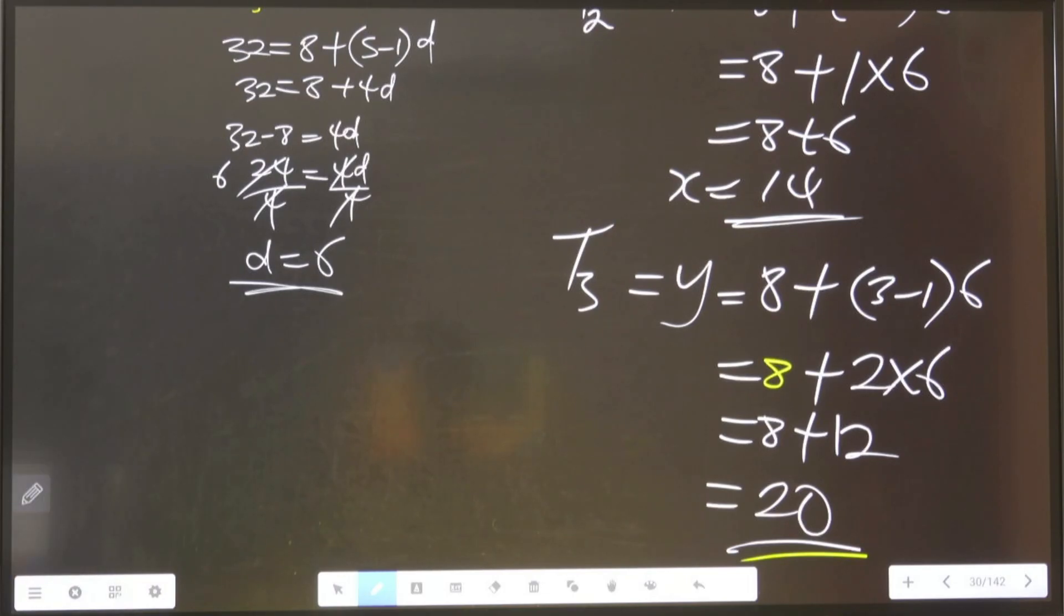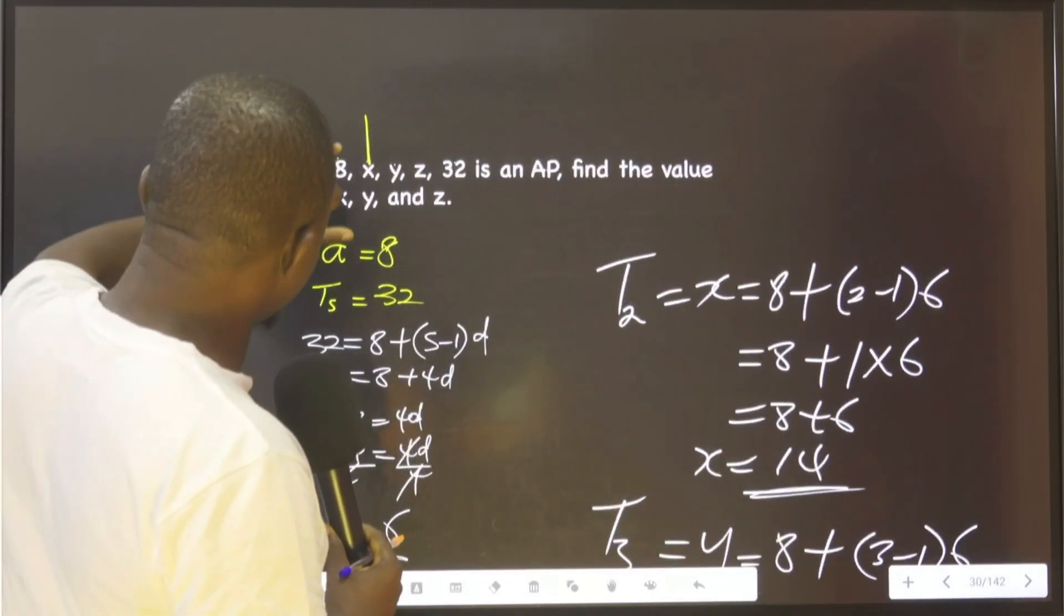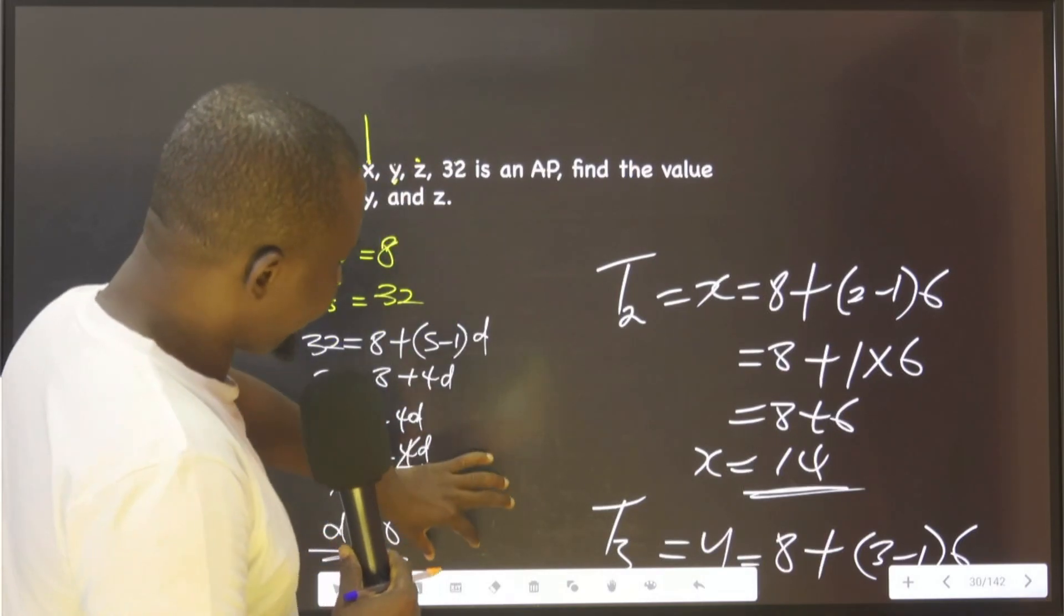That is our third term, the value of y. Finally, we find z. Z is the fourth one.